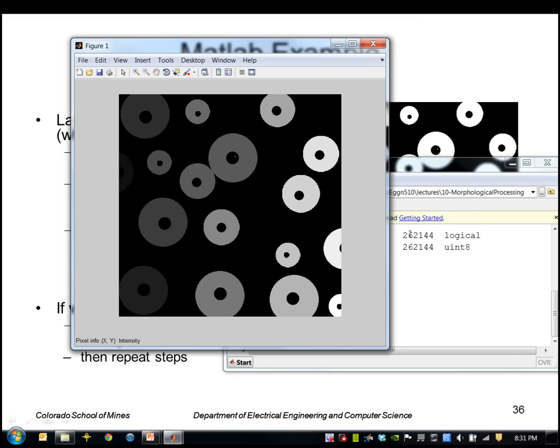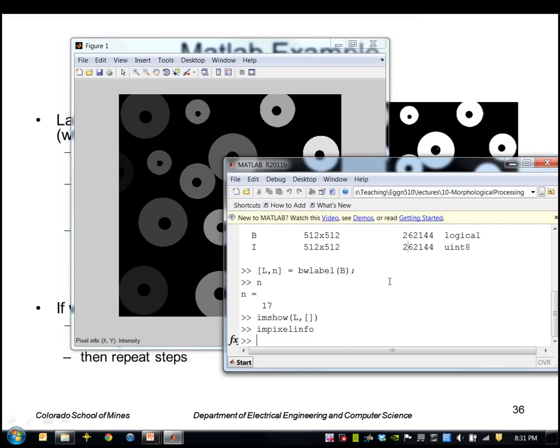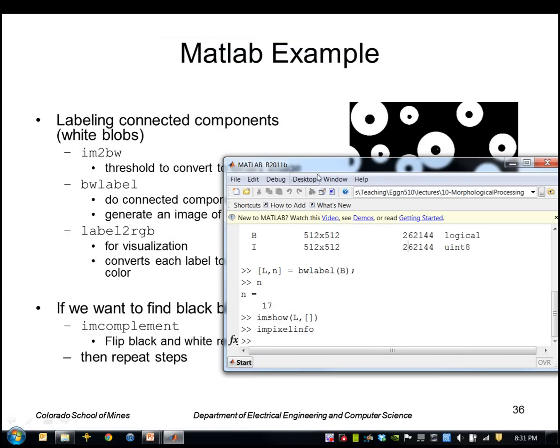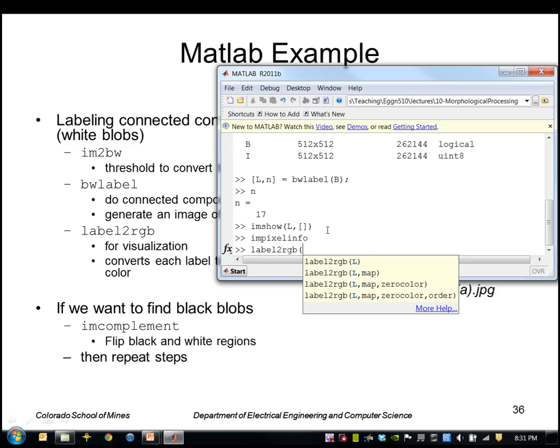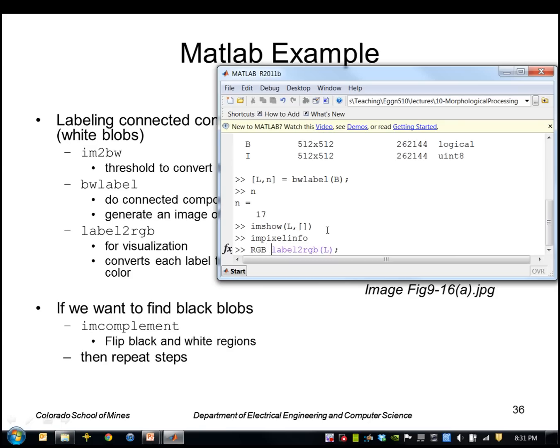So to visualize that better I'll use another function called label2rgb. So it is going to pick false colors for each of the labels, and I'll create a new image I'll call RGB.